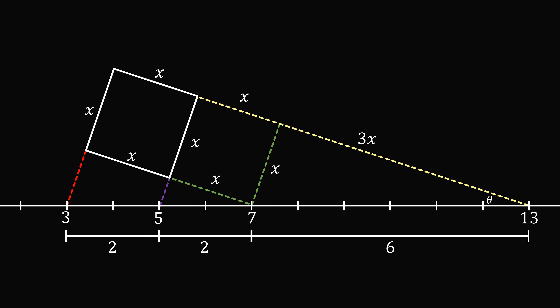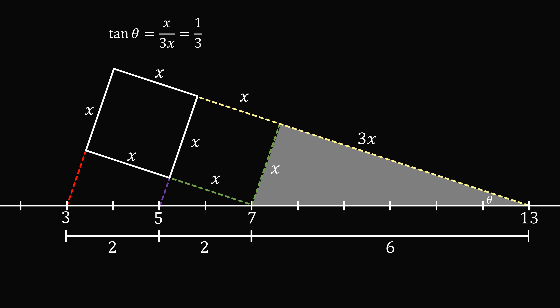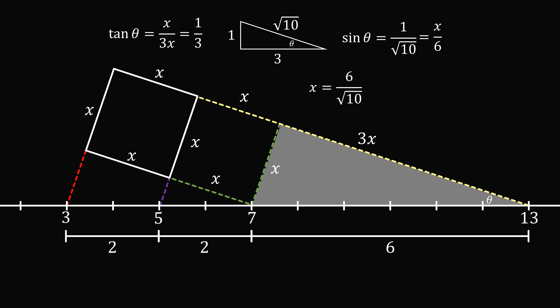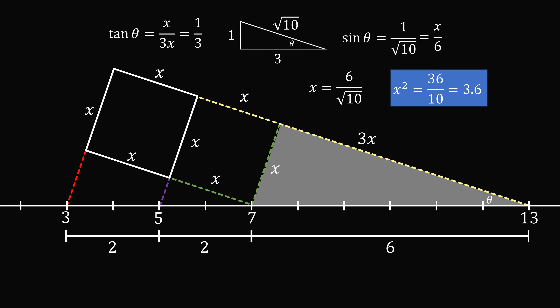There's another trigonometric approach. In this triangle, the tangent of theta equals X divided by 3X, which equals 1 over 3. For a right triangle with tangent of theta equal to 1 over 3, one side is 1, the other is 3, so 1 squared plus 3 squared equals 10, and the hypotenuse is the square root of 10. We calculate sine of theta equals 1 divided by root 10. Since sine of theta also equals X over 6, multiplying both sides by 6 gives X equals 6 divided by root 10. Squaring gives X squared equals 36 over 10, which equals 3.6.